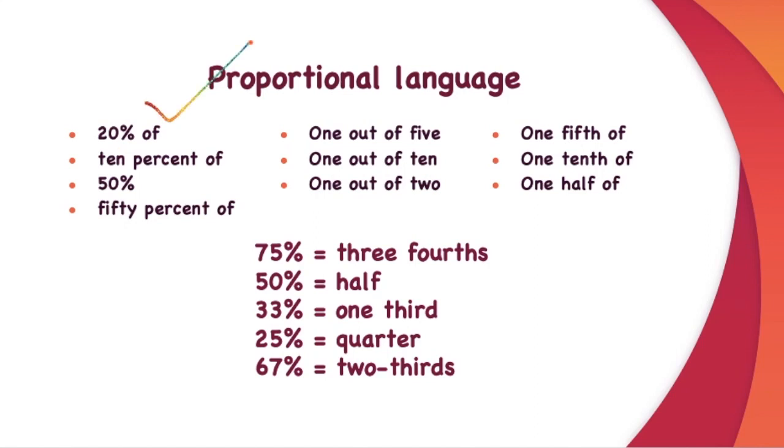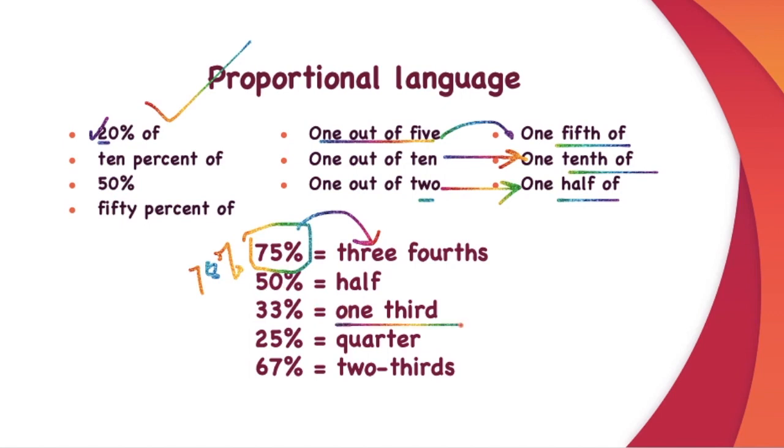Then for proportional language used mainly in case of a pie chart, you can use 20% of or 10% of. You can use it numerically or alphabetically, both are correct. One out of five, one out of ten, one out of two, one fifth of, one tenth of, one half of. Also 75%, you can say three fourths, or if it is 78%, you can say a little above three fourths. 50% is half. 33% is one third. And if it is 31%, below one third. Or if it is 32 or 34, you can say more or less one third, or approximately. 25% is quarter and 67% is two thirds.